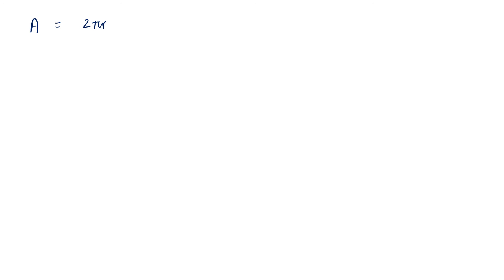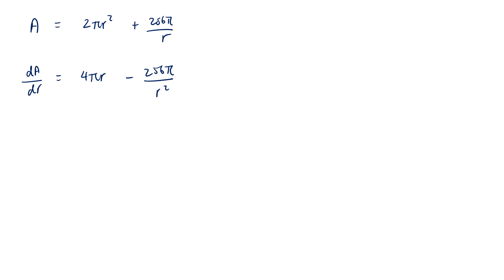From the previous slide, we have derived that the surface area of the can is given by A = 2πr² + 256π/r. Differentiating with respect to r, we get dA/dr = 4πr − 256π/r².